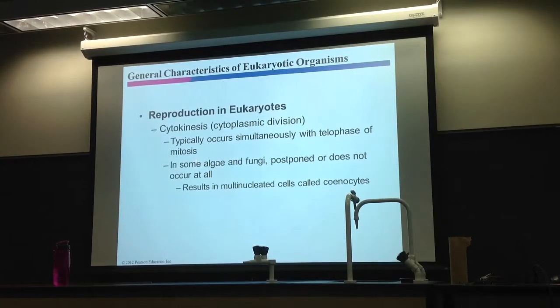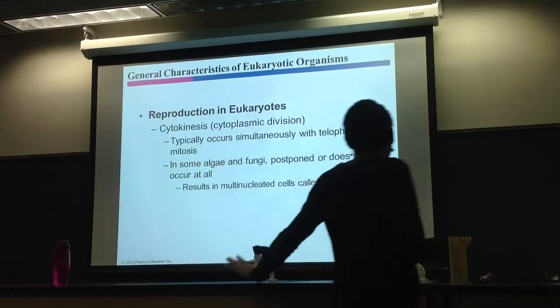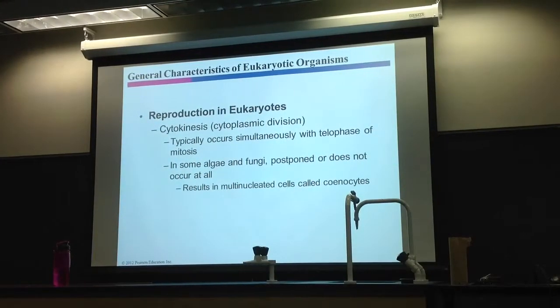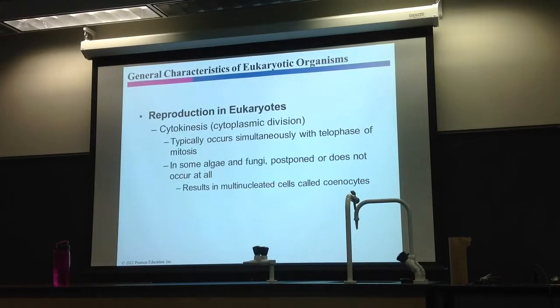Or, in some algae or some fungi, you can postpone it altogether, or it may not happen at all. So you may end up having one big cell with multiple nuclei in here, because cytokinesis never happens. In other words, if you postpone cytokinesis, you end up with multinucleated cells, cells with multiple nuclei.